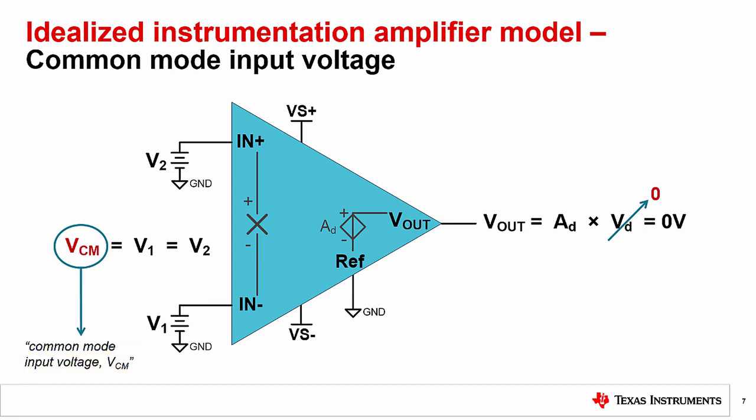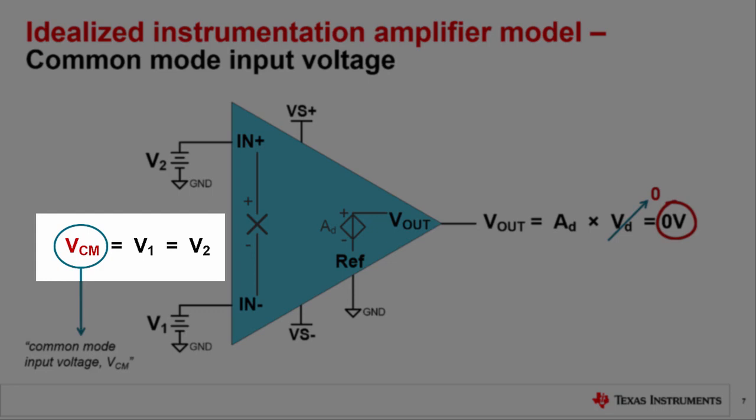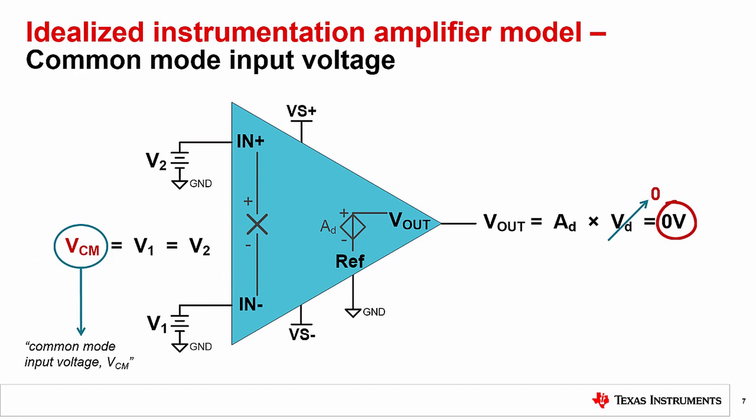By the virtue of differential input voltage amplification, we expect to see zero volts at the output. In other words, if the two input terminals are tied together to a common mode input voltage, then there is no input voltage difference, so VD is zero volts and the expected output is zero volts.